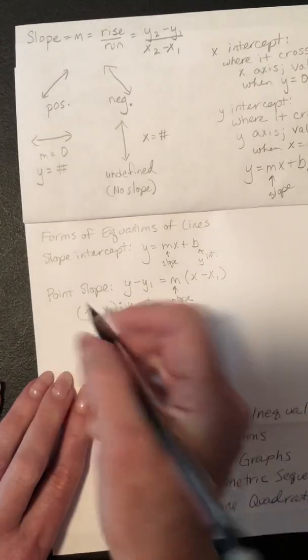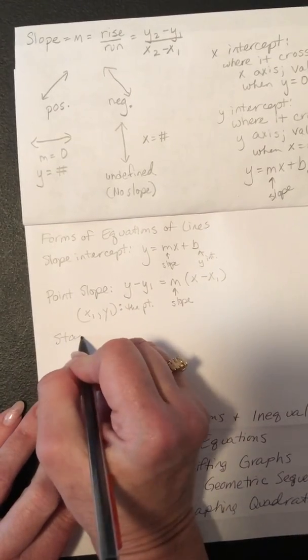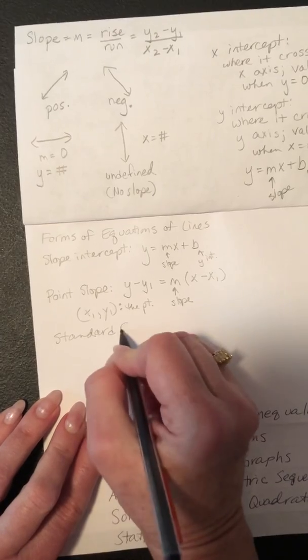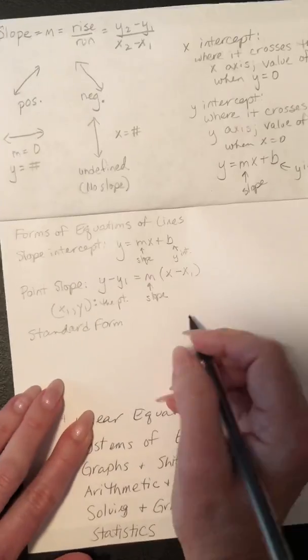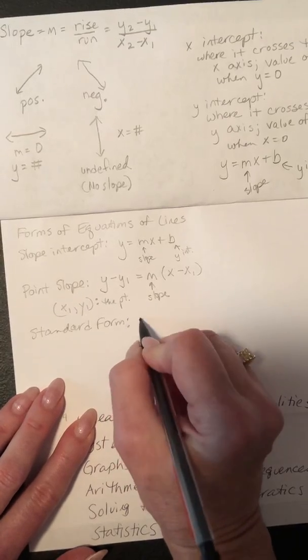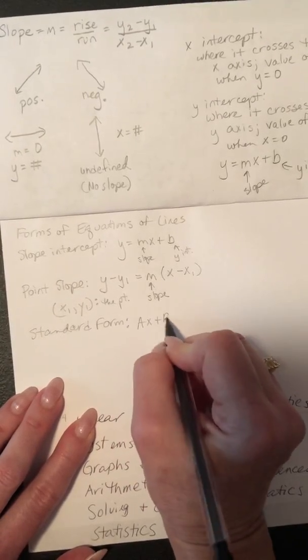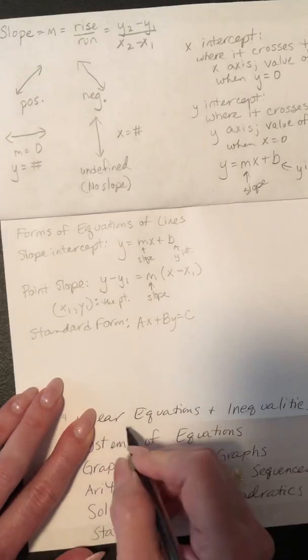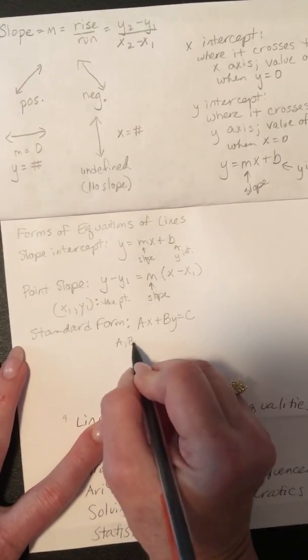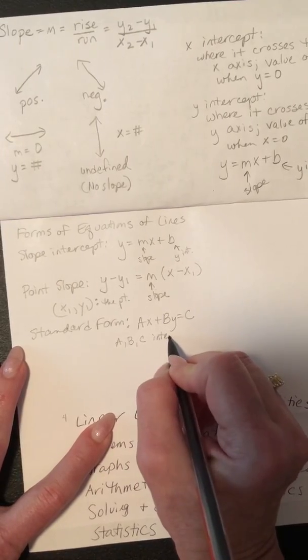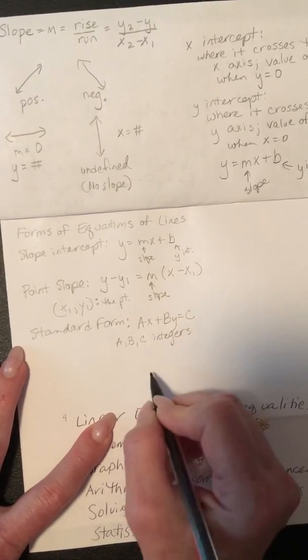And then the last form is called standard form. And the only thing that standard form is really good for is if you're going to graph by x and y-intercepts, like up here. But the standard form is ax plus by equals c, and it has a lot of rules. So, a, b, and c all have to be integers. So, nobody gets to have fractions or decimals.